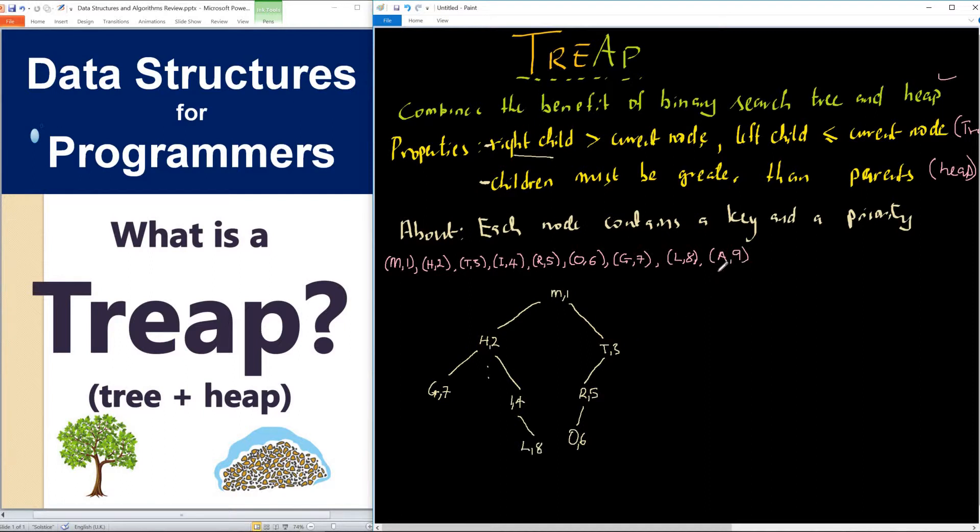And finally, we have A9. A is less than M, it goes this way. It's less than H, it's less than G, and it goes this way. So we have A9. Now we've built a Treap. This is fine. This is a Treap. You can actually put circles around them if you will. That would be okay.